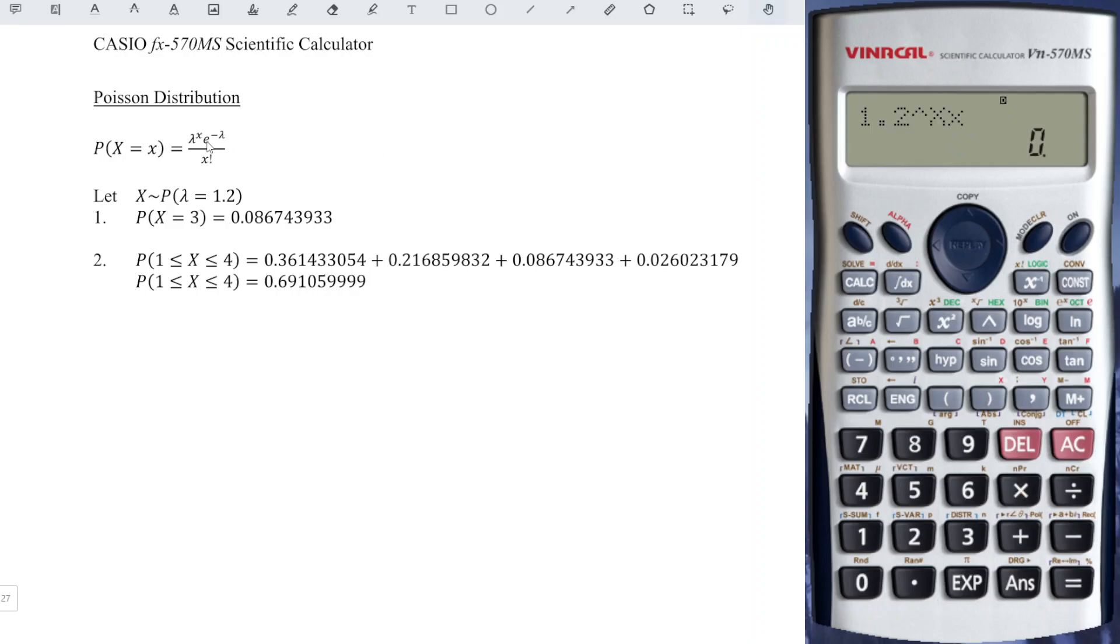and we times e to the power of shift ln. We put bracket, since we have negative here, negative lambda 1.2, close bracket, and we divide. Divide x factorial, so again, alphabet, close bracket, shift inverse to get factorial.